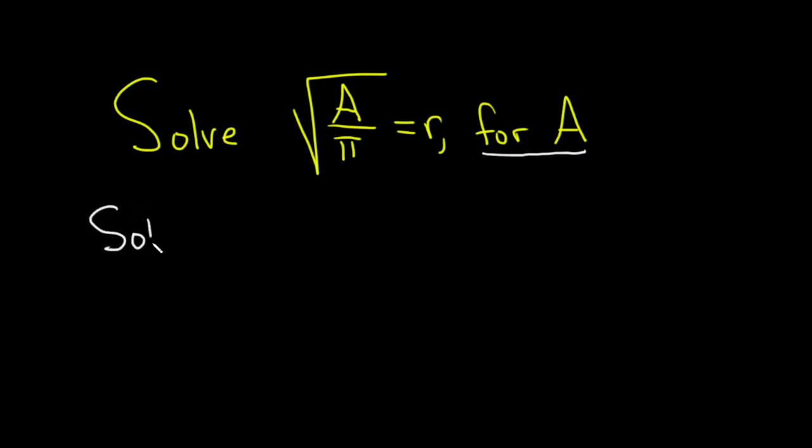Let's go ahead and work through it. Solution. We'll start by rewriting this equation one more time. Let's just go ahead and write it down here. This is A over π, and that's equal to r.